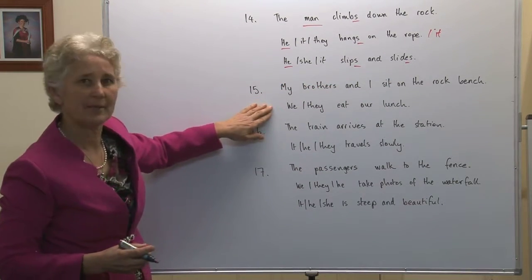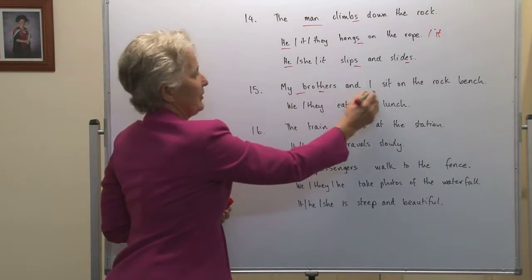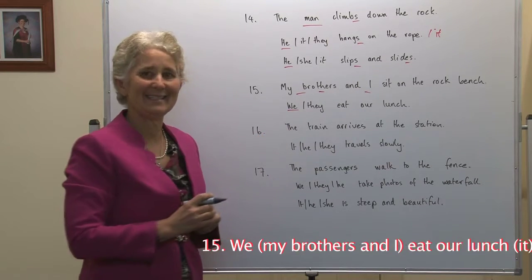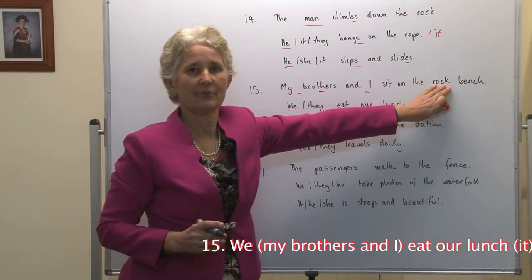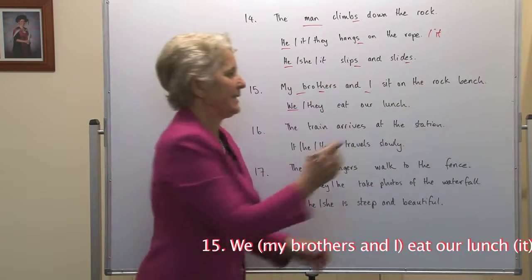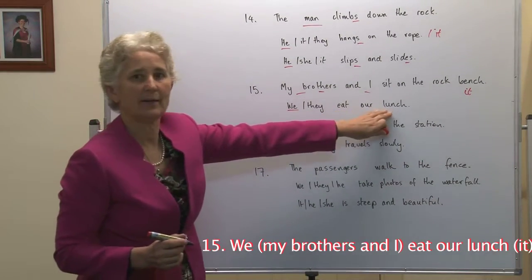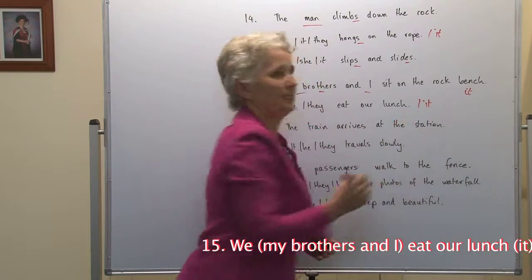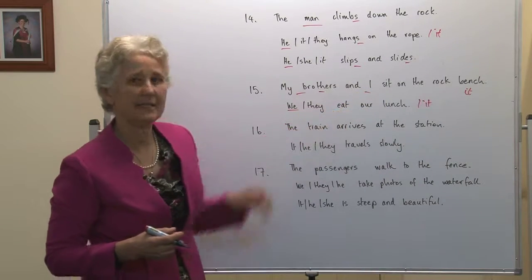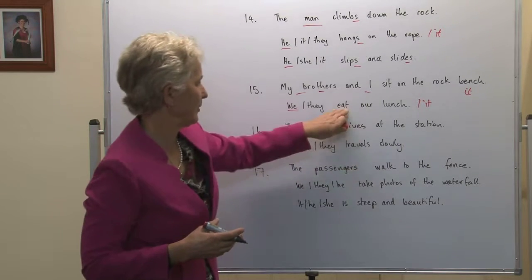Number fifteen: My brothers and I sit on the rock bench. We or they eat our lunch. Pearl is including herself in a small group, so it's first person — we eat our lunch. If we wanted to replace the rock bench, it is a singular third person it — we sit on it. We eat our lunch. Once again, it's an object, a thing, singular — we eat it. Notice sit and eat, plural, present tense — simple present tense. Plural does not take an s.